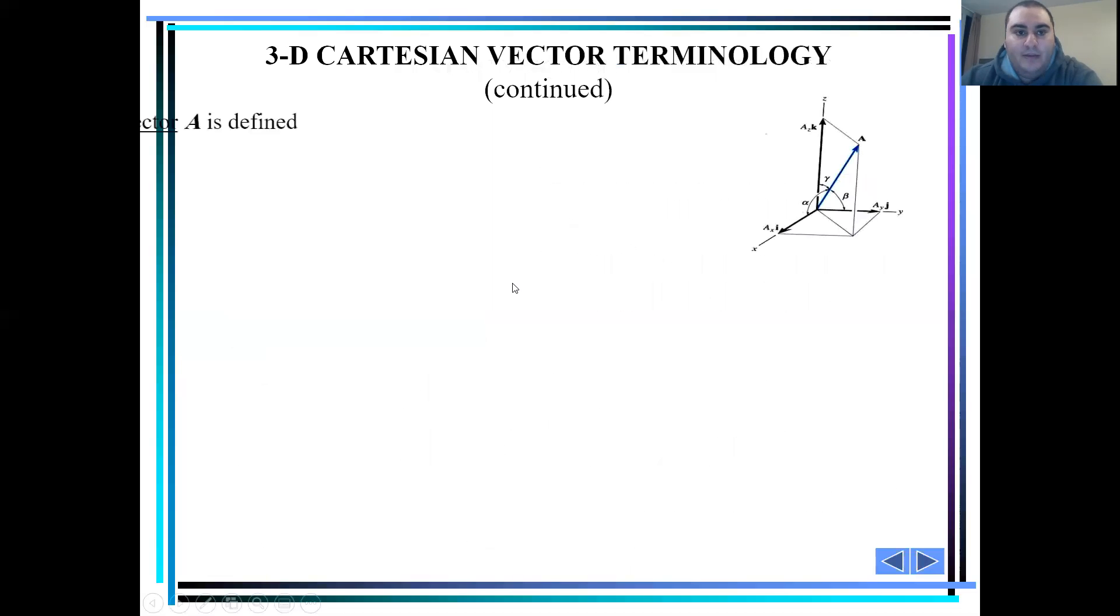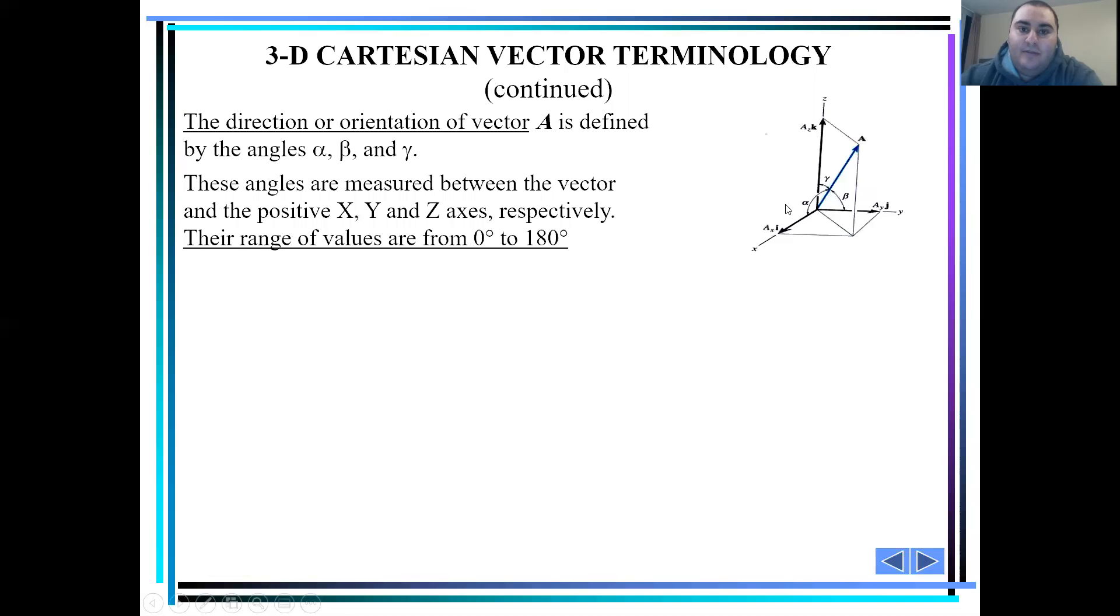Now, the direction or orientation of vector A is defined by the angles alpha, beta, and gamma. These are the angles measured between the vector A and the positive x, y, and z-axis, respectively. There's a range of values for these angles, and it's from 0 to 180 degrees.